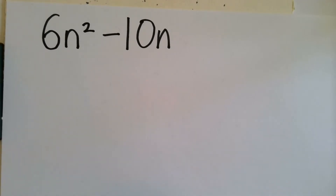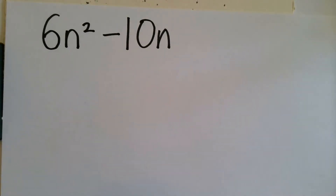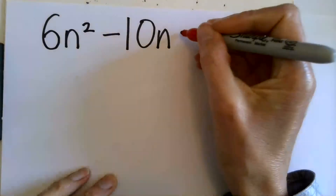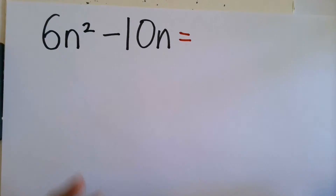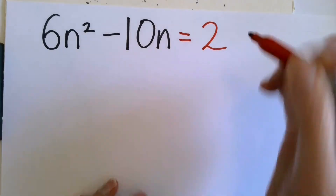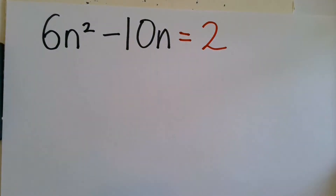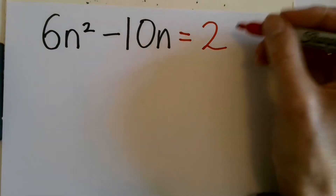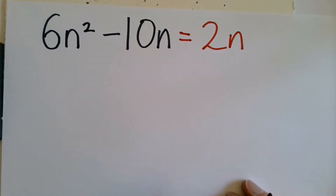So we're thinking here: what do the numbers have in common, and what do the letters have in common? If we look at the numbers first, 6 and 10 are both even numbers, so they have 2 in common — that's the highest common factor of 6 and 10. And then if we look at the letters, they have an n in common, so we can take 2n outside a bracket.